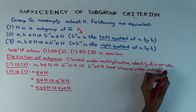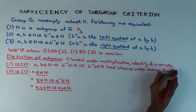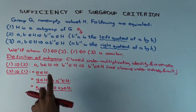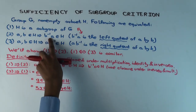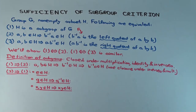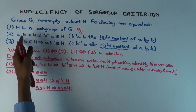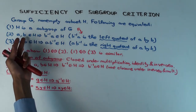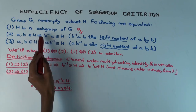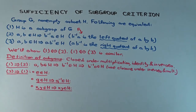Now we have to do the other direction, 2 implies 1. This is interesting because we're only assuming closure under one operation — the quotient — and from that we have to deduce closure under all three group operations: containing the identity, closure under inverses, and closure under products. We have one thing going for us: it's non-empty, so we can pick an element to begin with, and we can set a and b to be equal to each other.